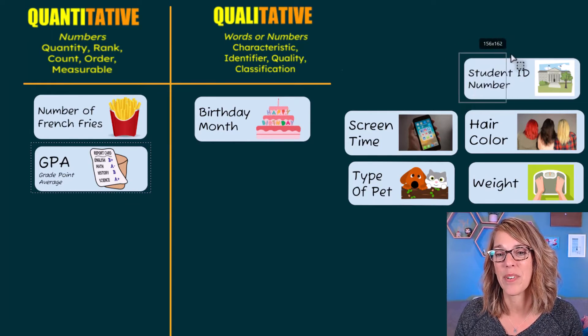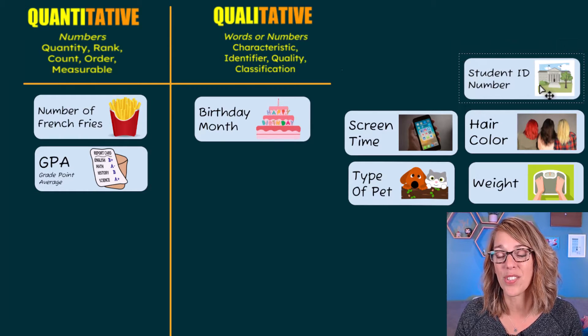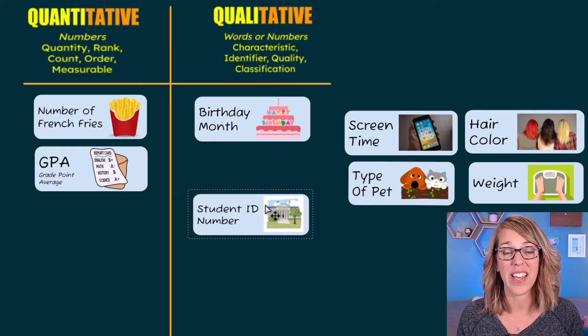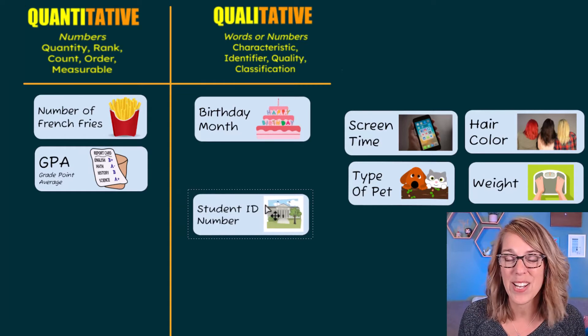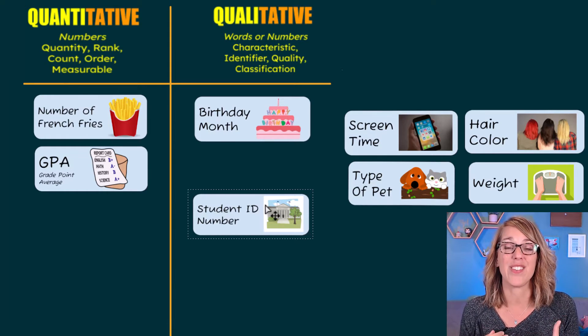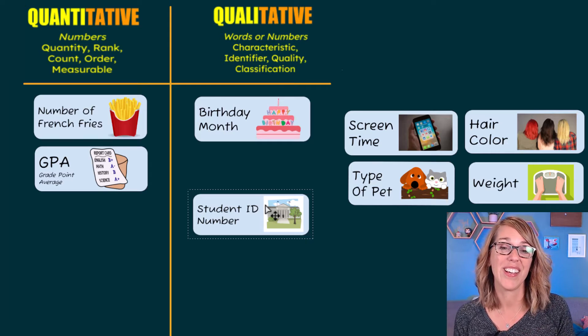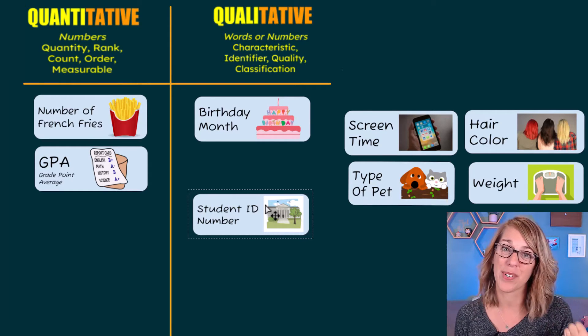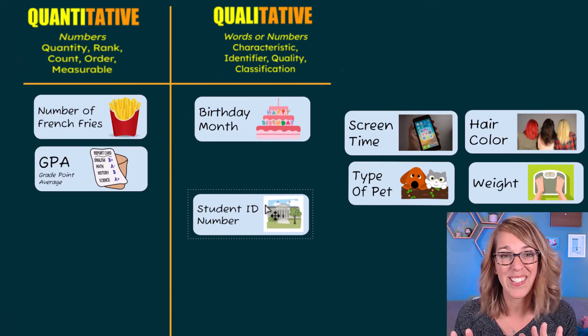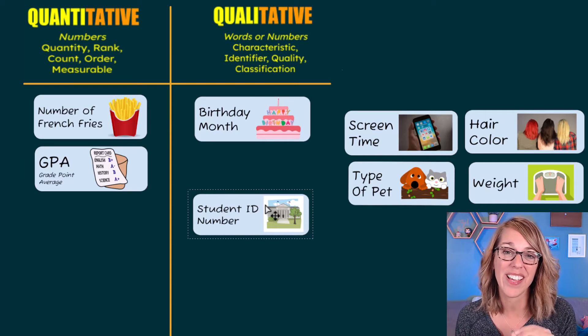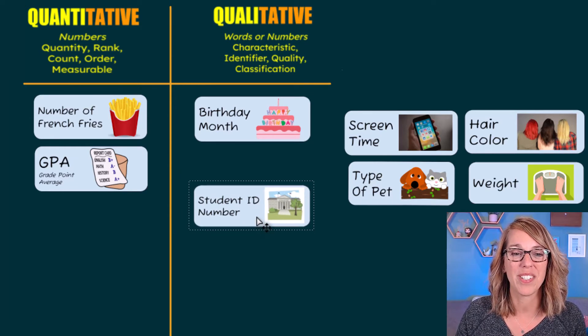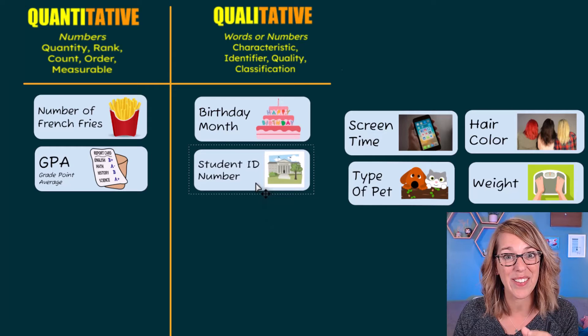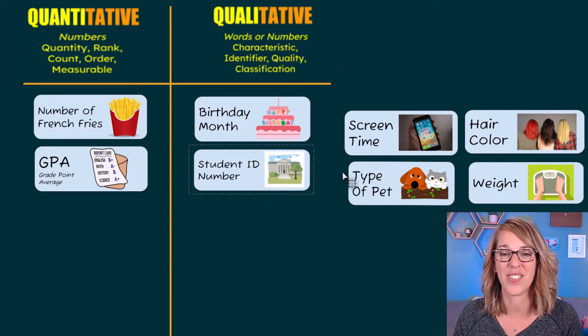Next is the student ID number. Now student ID number is also a number. So a quantity would be a really good guess here, but the student ID number is just identifying you from somebody else. Your student ID number might be a higher number than the person sitting next to you, but it doesn't matter. It's just identifying you from another person. So we put student ID number here under qualitative. It identifies you from another student.